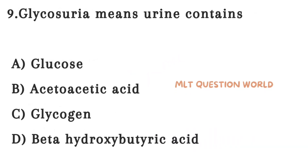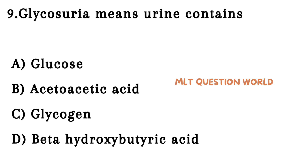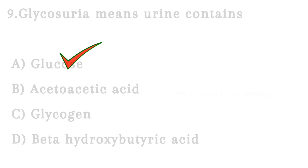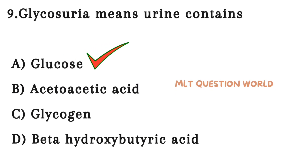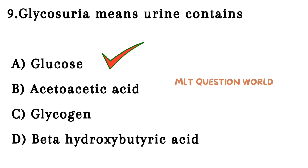Next one. Glycosuria means urine contains: Option A. Glucose, Option B. Acetoacetic acid, Option C. Glycogen, Option D. Beta-hydroxybutyric acid. Glycosuria means what? The right answer is Option A — Glucose. Glycosuria means glucose in urine.